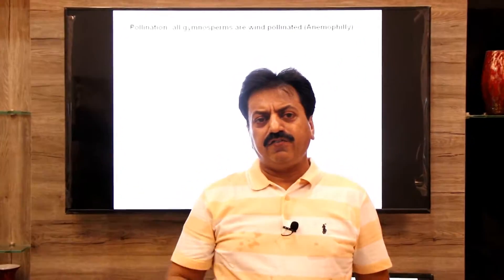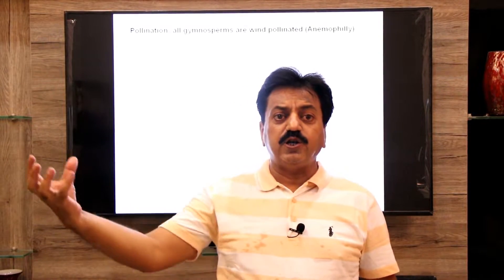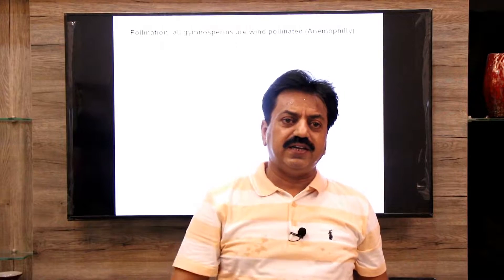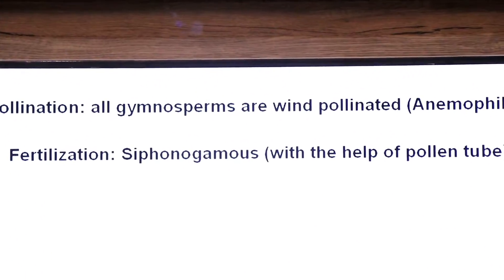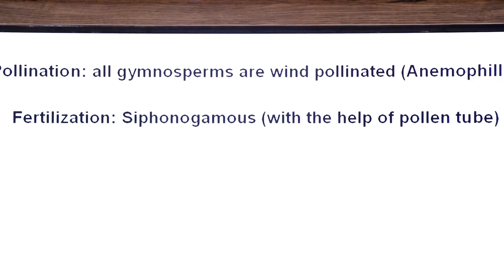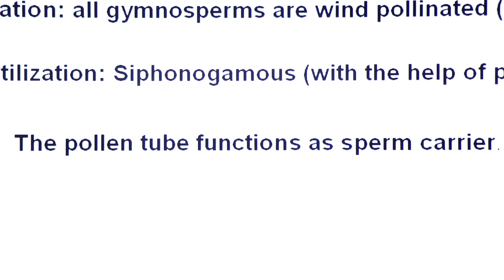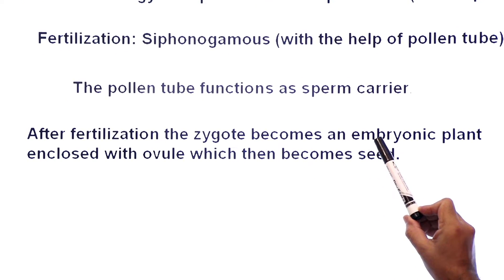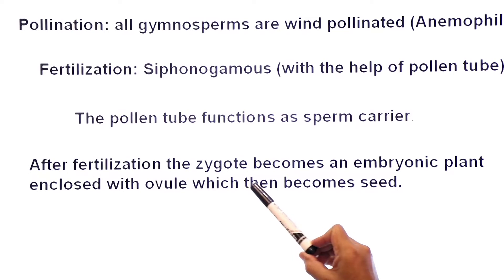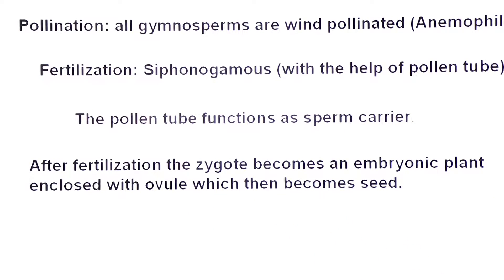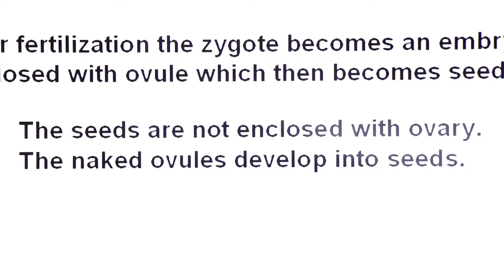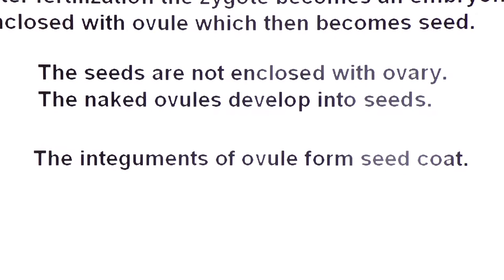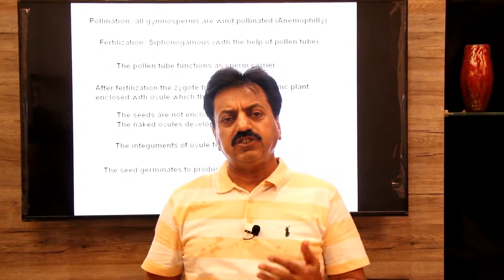The pollination by air is called anemophily. In case of gymnosperms, transfer of pollen grains from male cone to female cone is called pollination. Pehle pollination hota hai, phir pollen tube develop hota hai fertilization ke liye. They are siphonogamous — their fertilization takes place with the help of pollen tube; the pollen tube functions as a sperm carrier. After fertilization, the zygote becomes an embryo. The ovule becomes seed; the seeds are not enclosed within ovary — they produce naked seeds. The integuments of the ovule form the seed coat. The seed germinates to produce a new sporophyte.